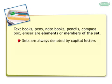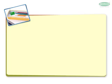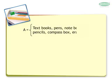Sets are always denoted by capital letters A, B, C, D and so on, and the elements by small letters. Let us denote our set as set A. So, we can say that each element, i.e. textbook belongs to set A, pencil belongs to set A, and so on.